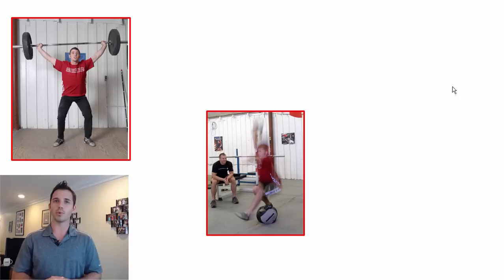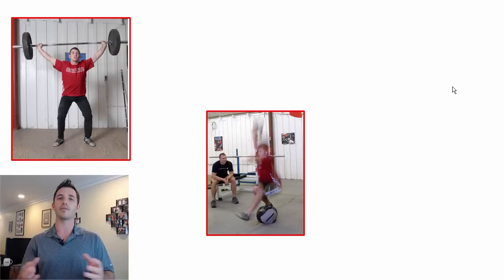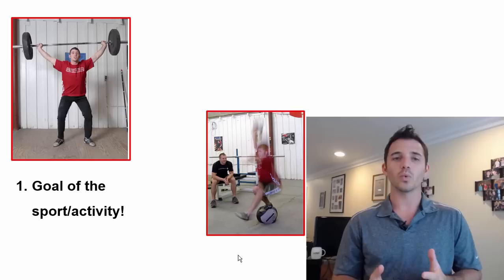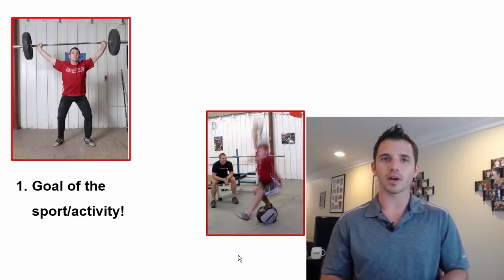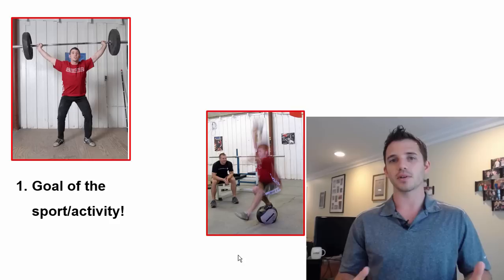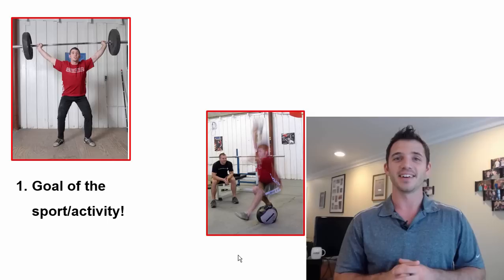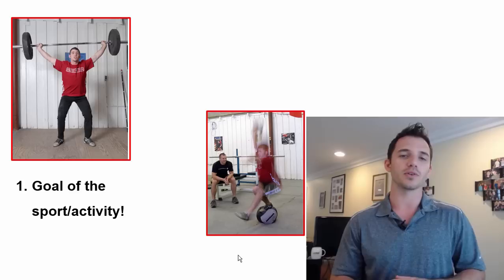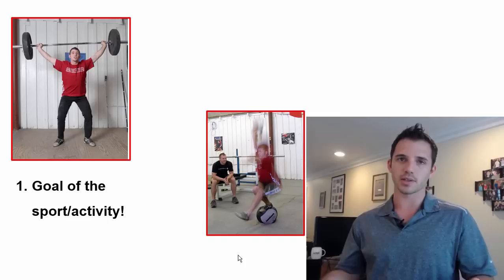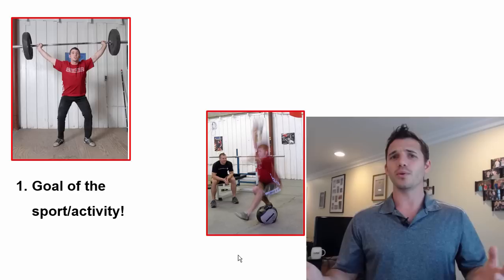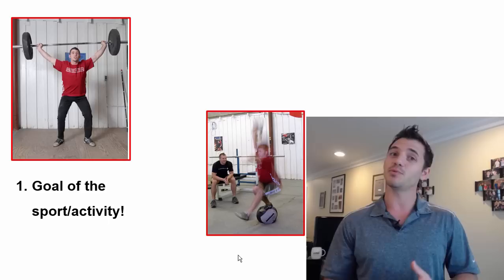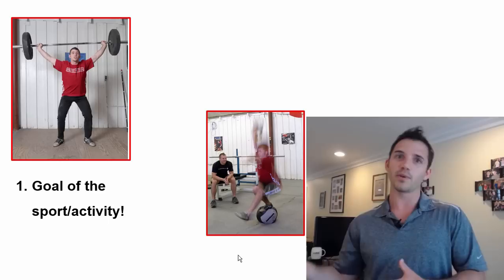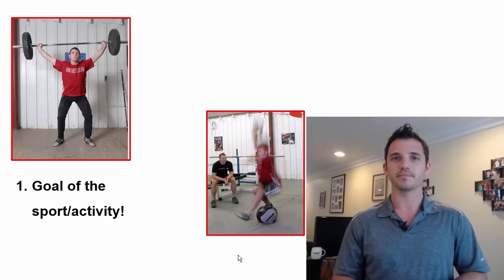Let's jump into these 11 things in more detail. Number one: what's the goal of the sport or activity? You really need to understand your client's desires or the reason you're putting the program together. If Randy is competing in Olympic weightlifting, the barbell overhead squat is probably the better exercise choice because it's more specific to that goal. If you're interested in becoming more well-rounded, having fun in the gym, or practicing parkour, then the one-foot, one-arm medicine ball squat might be more related to the goal of the sport or activity.